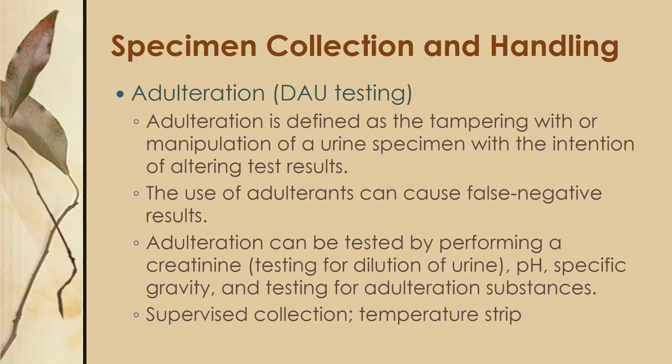A little bit on adulteration for drugs of abuse testing. Adulteration is defined as tampering with or manipulation of a urine specimen with the intention of altering the test results. The use of adulterants can cause false negative results. Adulteration can be tested by performing a creatinine test — testing for dilution of the urine — a pH, a specific gravity, and testing for some of the adulteration substances. Ways around that include a supervised collection where you witness the person providing the sample, and a temperature strip to make sure the urine is at body temperature.